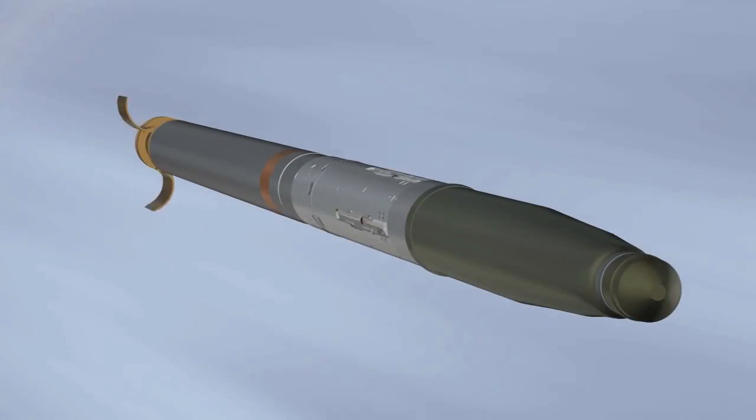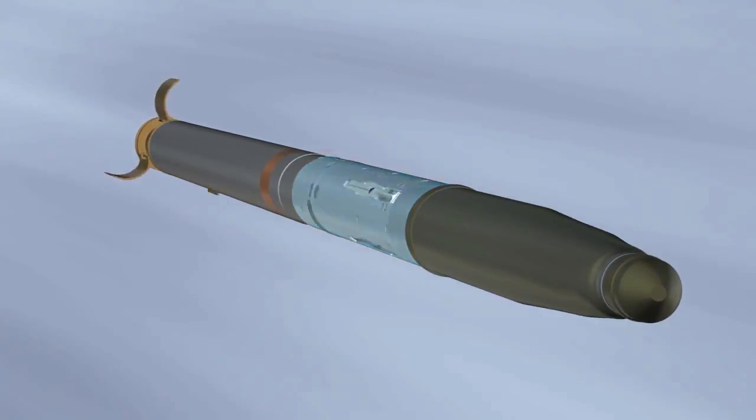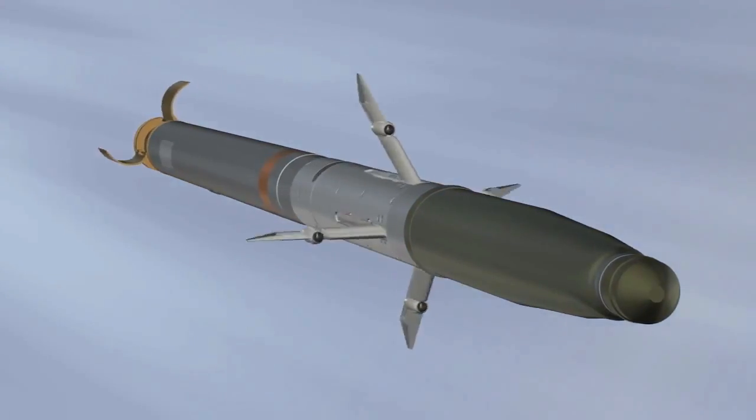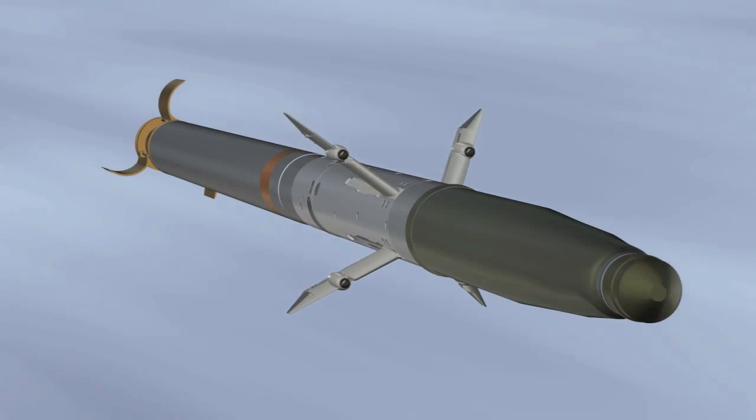Within one second after launch, the battery energizes the electronics in the guidance section. The wings deploy, and the trailing edges, called flaperons, de-roll and stabilize the rocket.